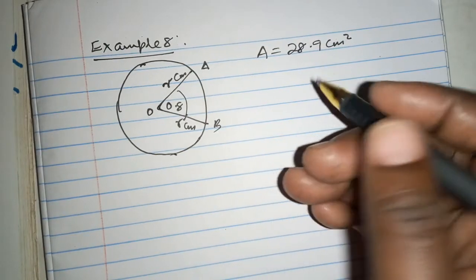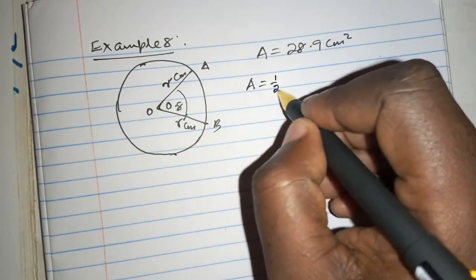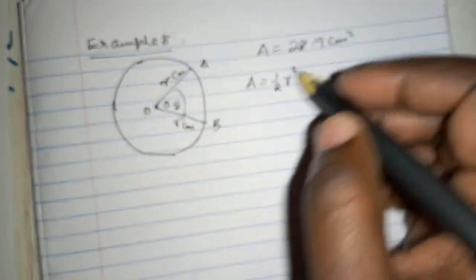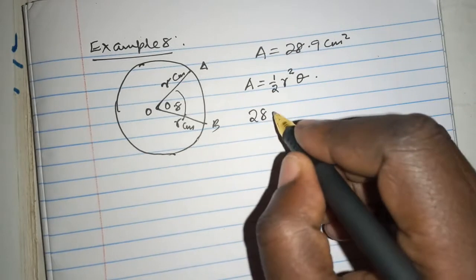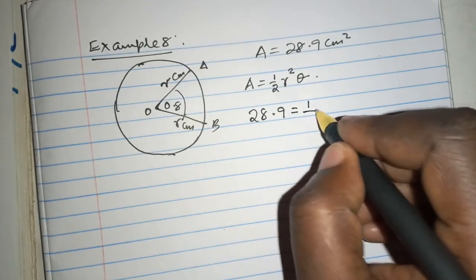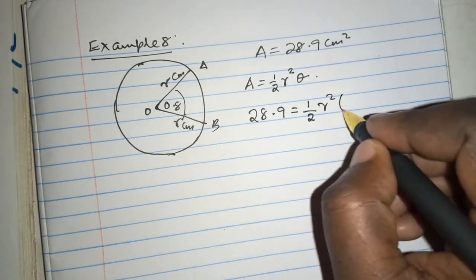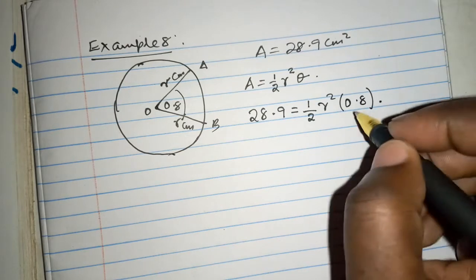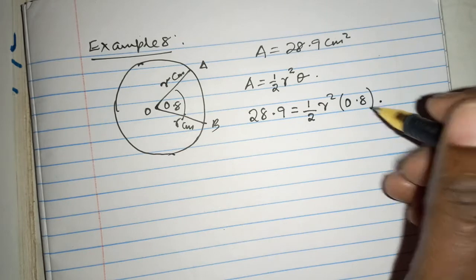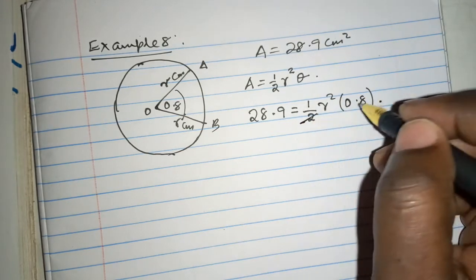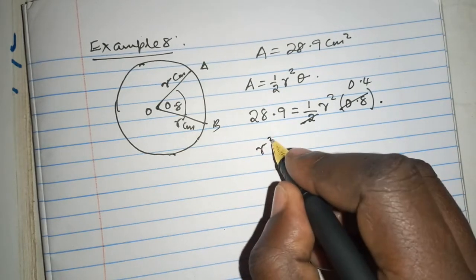Find the value of R. And we know the area is given by a half R squared theta. And the area happens to be now 28.9 must have given by a half R squared 0.8. Because theta is 0.8. So if we just clean up this, we get by 2 by 2, 0.4.